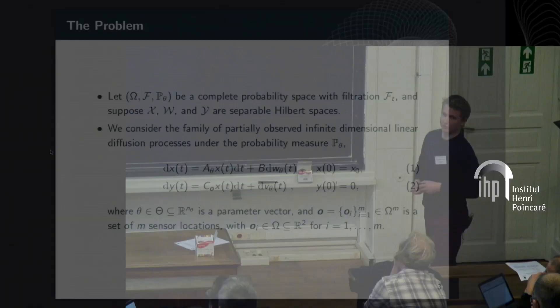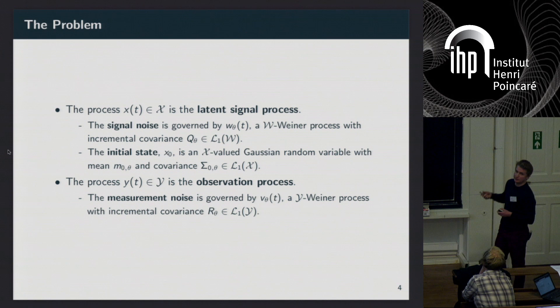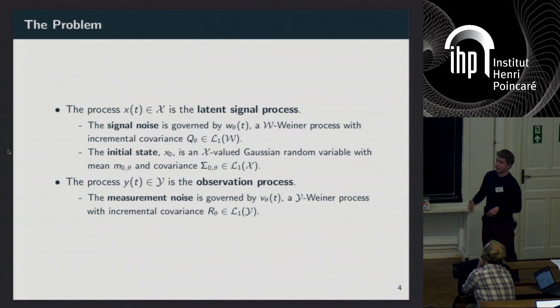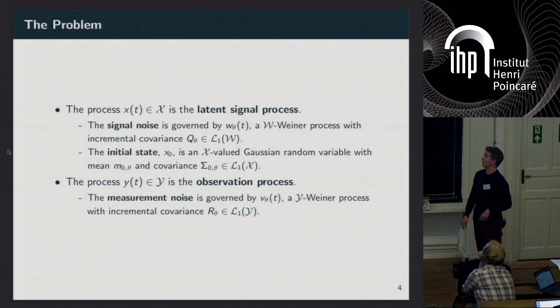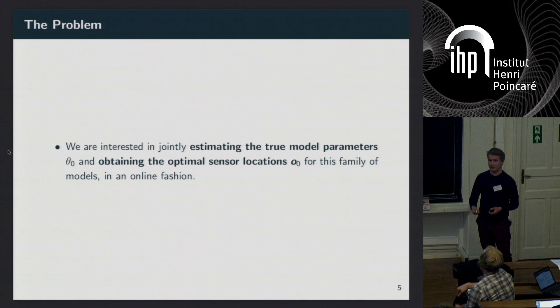That's just a linear observation equation in continuous time. X is the process we're interested in — the latent signal. The signal noise is governed by a Wiener process with some incremental covariance which depends on parameters, and we have the Gaussian assumption for the initial state. Y is the observation process, and the measurement noise is governed by another Wiener process with some other incremental covariance. We're interested in jointly estimating the true parameters and obtaining some optimal set of sensor locations.